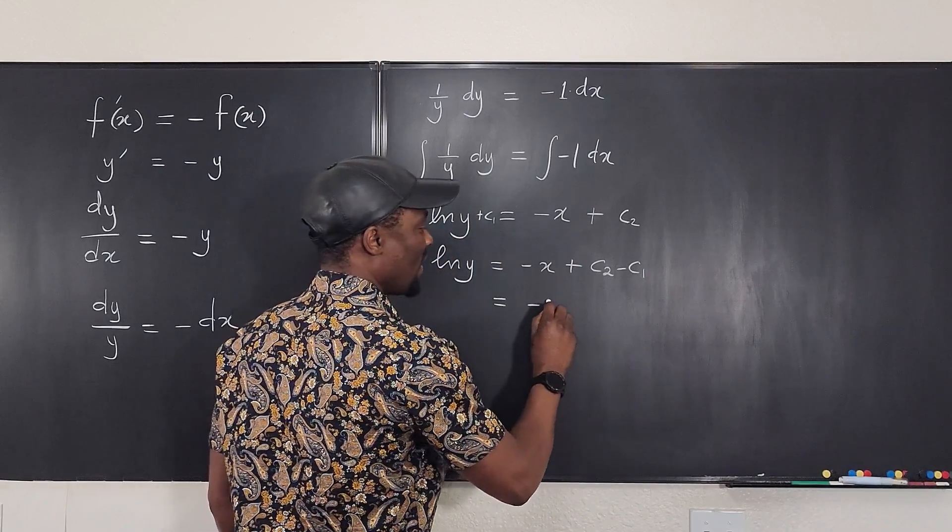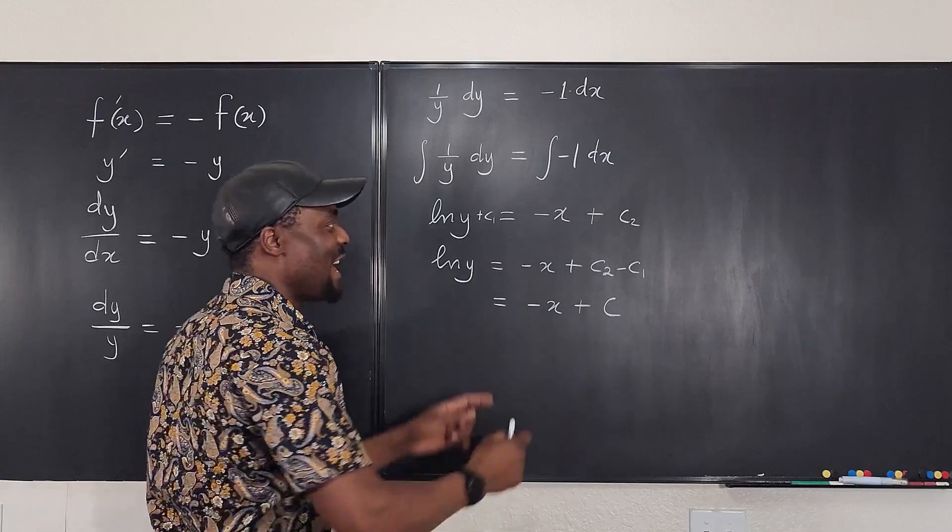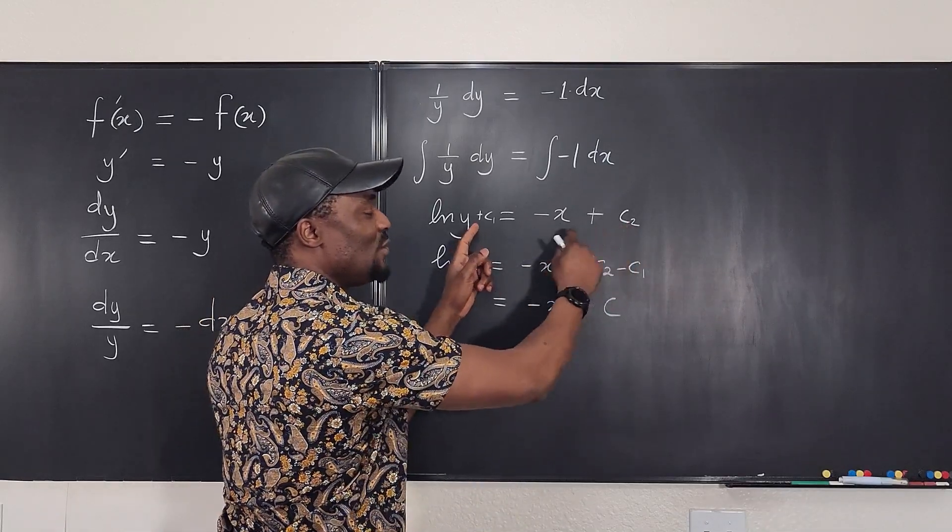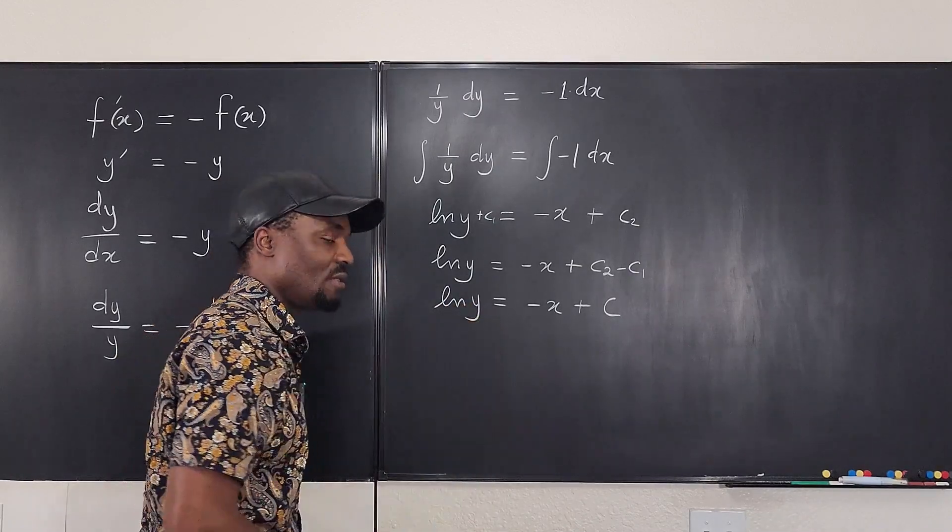Well, what if I call that c2 minus c1 just c? You see that the plus c has come back. So, don't waste your time trying to generate two c's. Just write plus c the first side because it covers everything. This is the natural log of y.